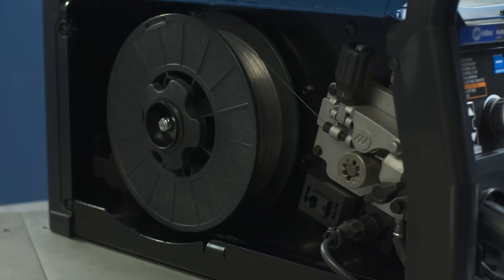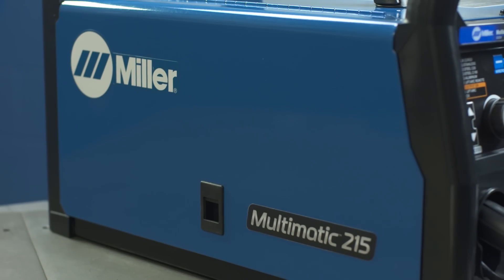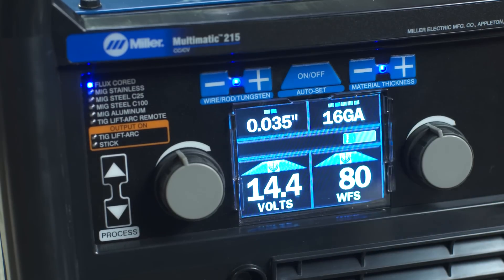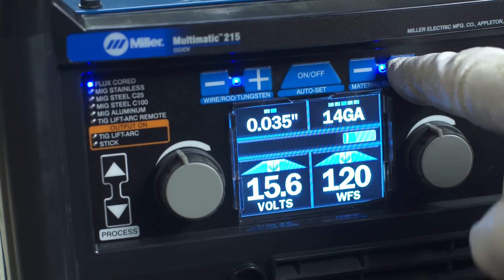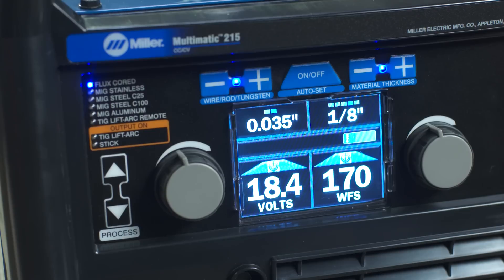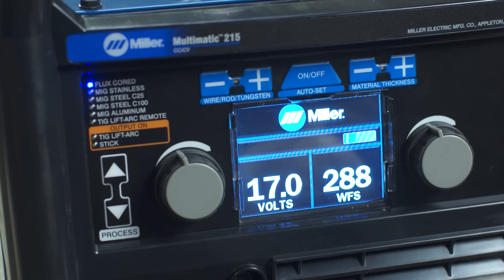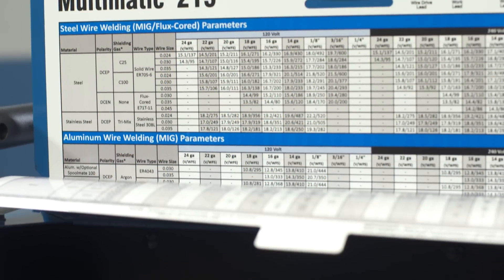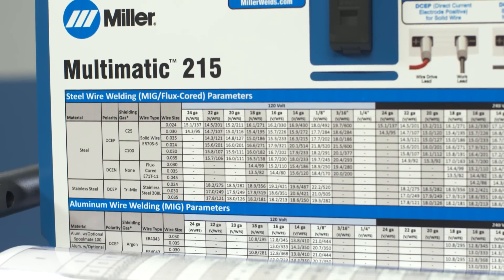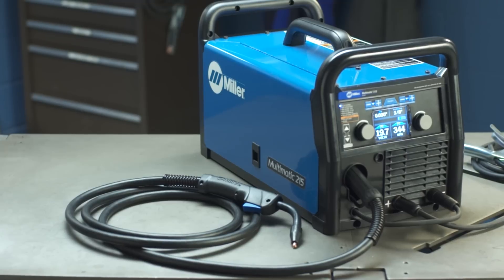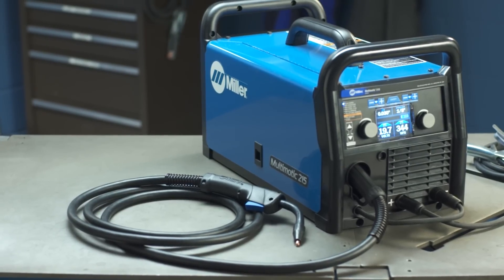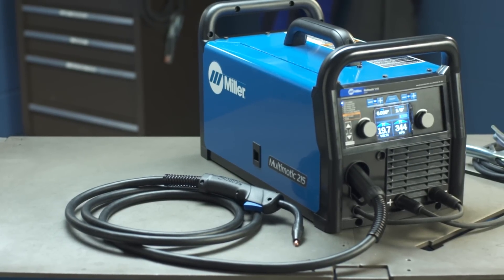Snip the wire off, then close the side door. Finally, select the wire diameter and material thickness if you're using the Auto Set Elite feature or if you're using manual mode. Adjust your voltage and wire feed speed. As a guide, a parameter chart is inside the side door. Setting up the Multimatic 215 to weld steel with flux cord wire is as easy as that.